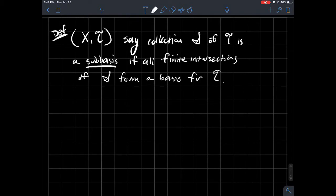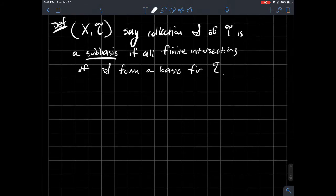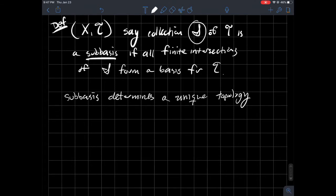A useful way to think about what a subbasis is: the perspective that we're going to use subbasis for is we're going to use subbasis to build a topology. So it turns out that a subbasis determines a unique topology. In other words, if you had some subset S, it turns out that there's exactly one T, one topology that corresponds to this S here.